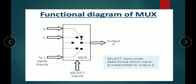If we select i1, that is input number one, then input number one is connected to the output and we get the corresponding output to input one. These are the select lines for the MUX. The select input code determines which input is transmitted to the output Z.